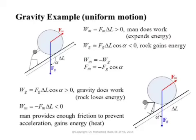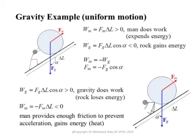An illuminating example to prepare us for the electric field is a gravity example. We have an object and a man trying to push it up a ramp. If the man moves it in the upward direction, he is exerting positive work because his force Fm is in the same direction as the movement. As a result, the object gains energy — it rises to a higher elevation.